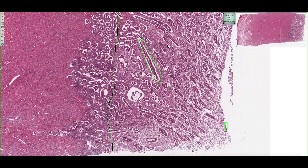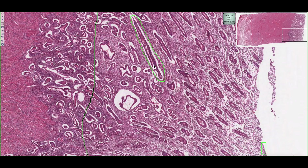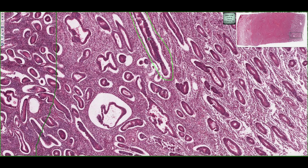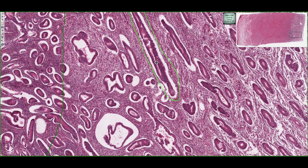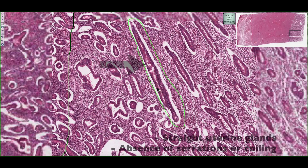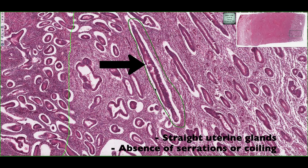If we look at the stratum functionalis, we know this is in the proliferative phase by the appearance of the glands. Here, the gland outlined in green has a relatively straight appearance. In the secretory phase of the menstrual cycle, these glands would have more of a serrated or corkscrew appearance.